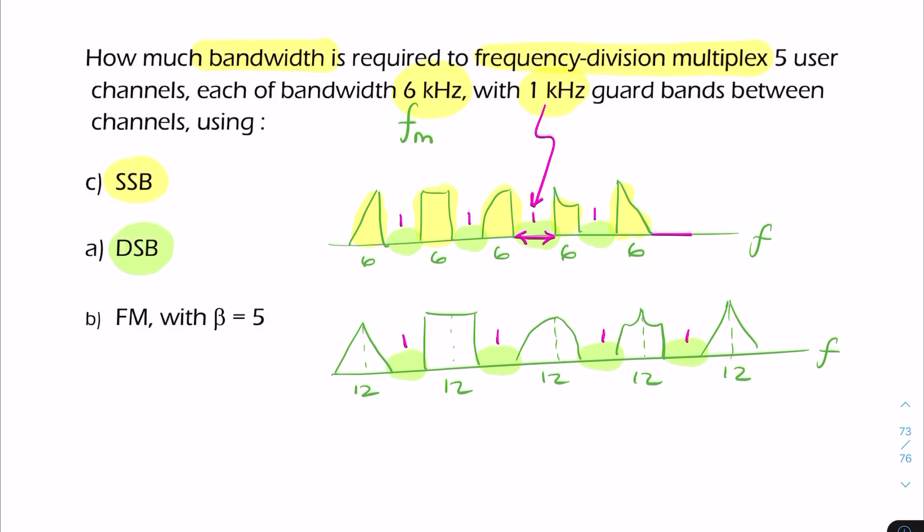The total bandwidth will be 5 times 12 plus 4 times 1, which gives you 64 kilohertz—slightly less than twice the bandwidth for SSB.